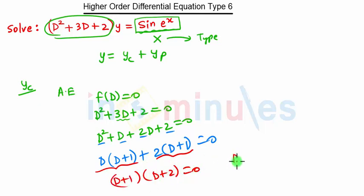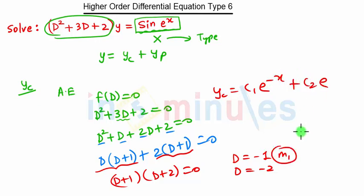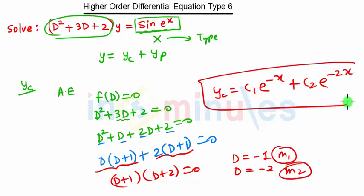Taking (D+1) common leaves (D+1)(D+2) = 0. So the roots are D = −1 and D = −2. Therefore yc = c₁e^(m₁x) + c₂e^(m₂x), where m₁ = −1 and m₂ = −2, giving yc = c₁e^(−x) + c₂e^(−2x).